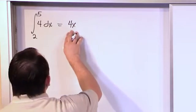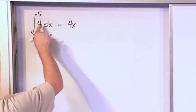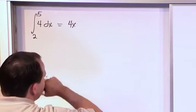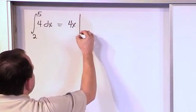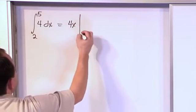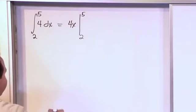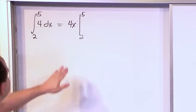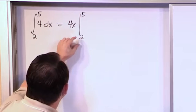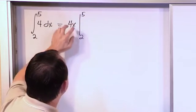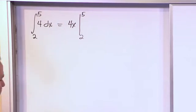Whenever you do that, you still need to evaluate at the limits of integration like we talked about before. So, what you do is you draw a vertical line, not a squiggly line, a vertical line, and you put the 2 and the 5 over here. What this means is that I've done the integration, I've found the anti-derivative, but I still need to evaluate the answer at the limits of integration that we talked about.